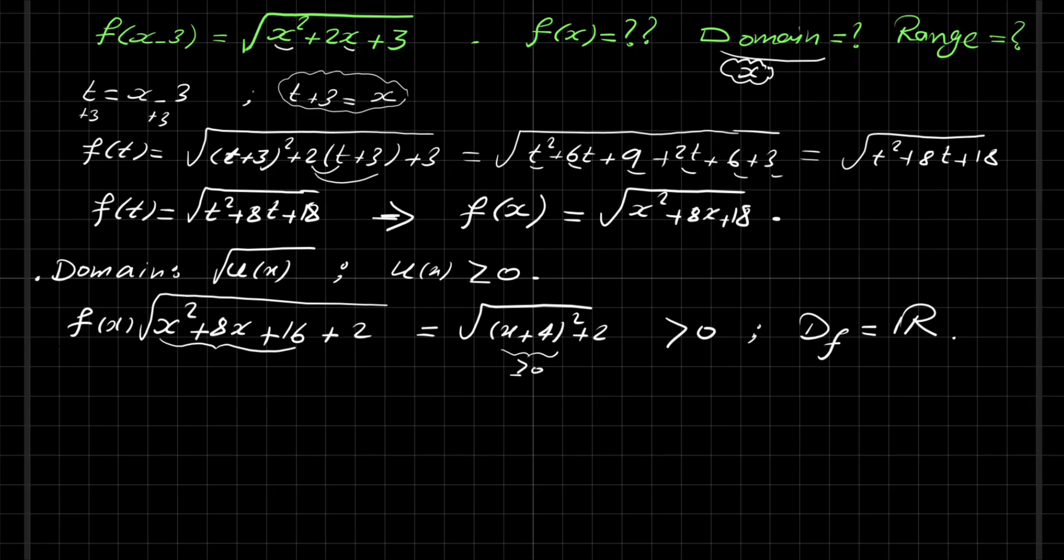Now for the range, we need to find the set of the output for f(x). So we need to find the values of f(x). Here again, if we look at f(x) in this way, which is square root of x plus 4 squared plus 2.